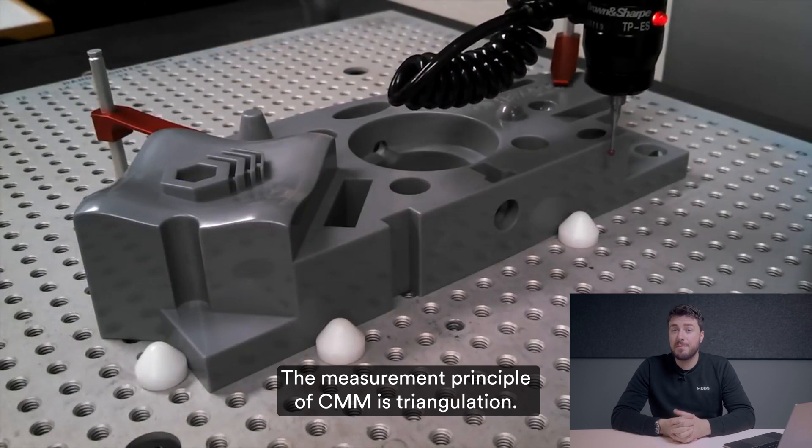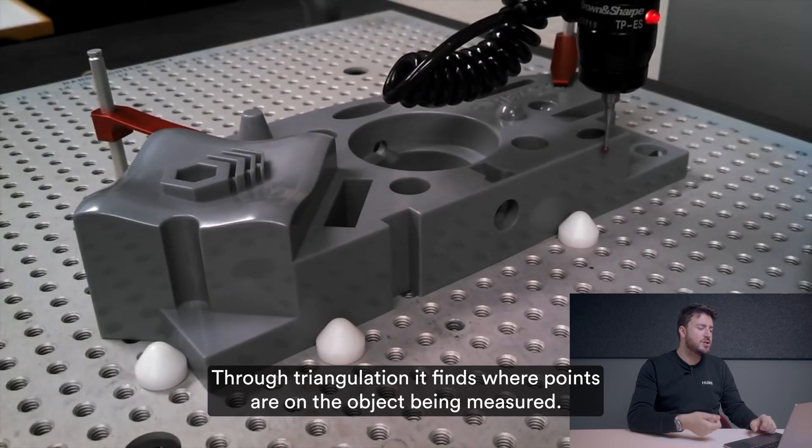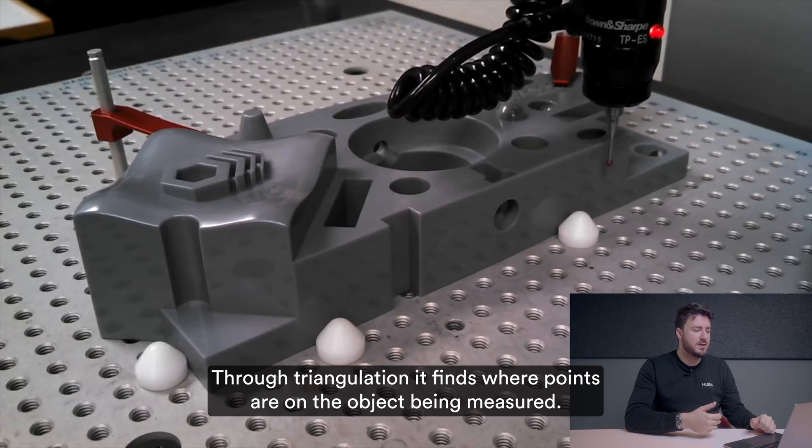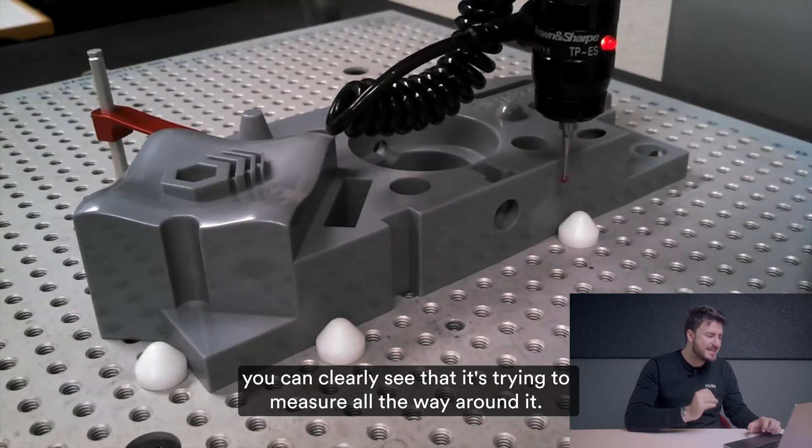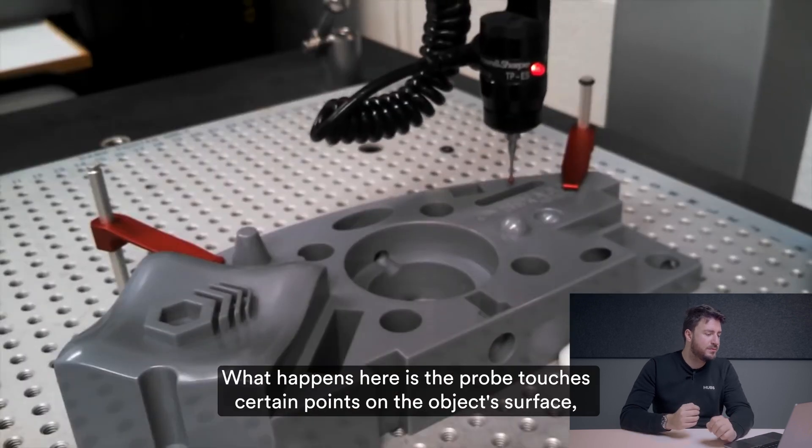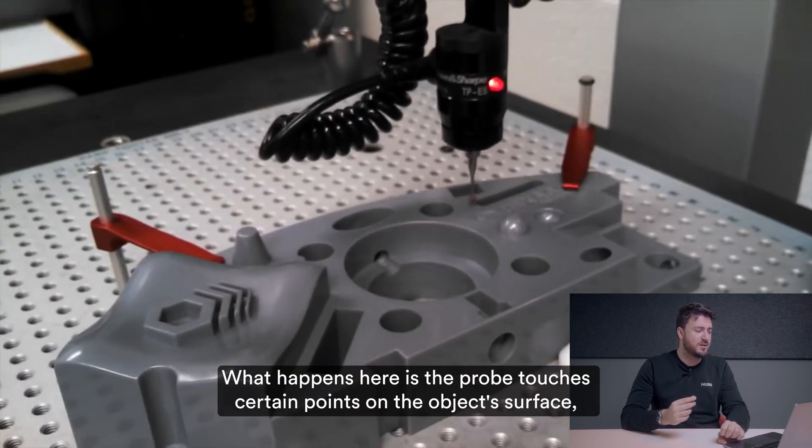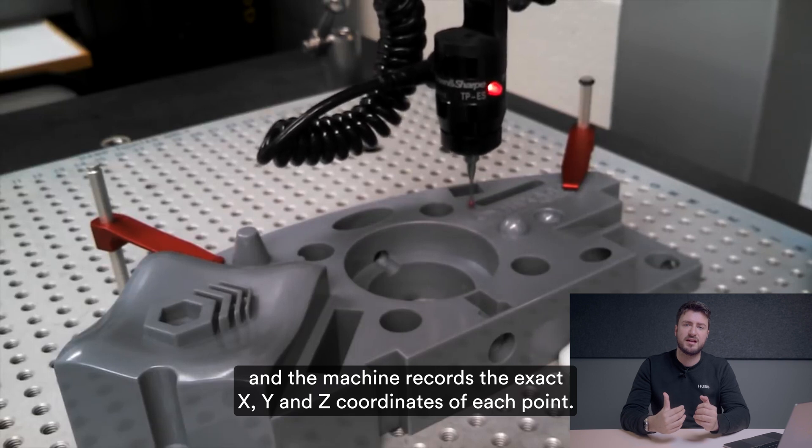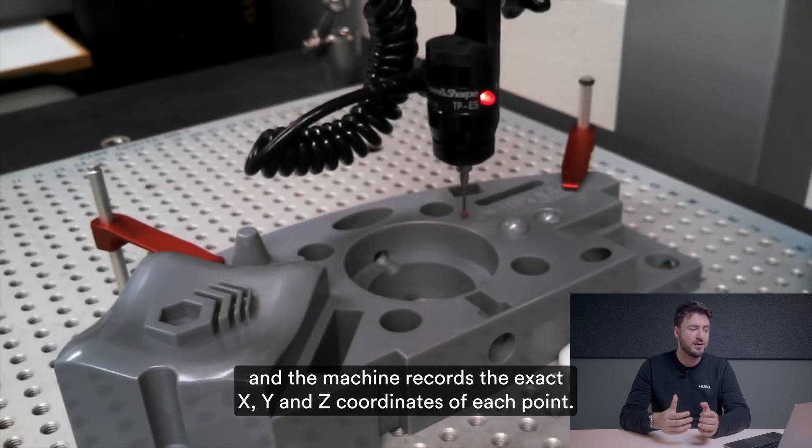The measuring principle of CMM is triangulation. Through triangulation it finds where points are on the object being measured and if you look at this clip right here you can clearly see that it's trying to measure all the way around it. What happens is the probe touches certain points on the object surface and the machine records exact X, Y and Z coordinates of each point.